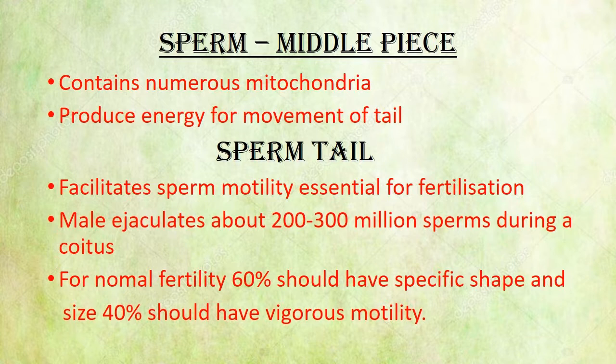The male ejaculates about 200 to 300 million sperm during coitus. In a single ejaculation, sperm are released into the female genital tract.